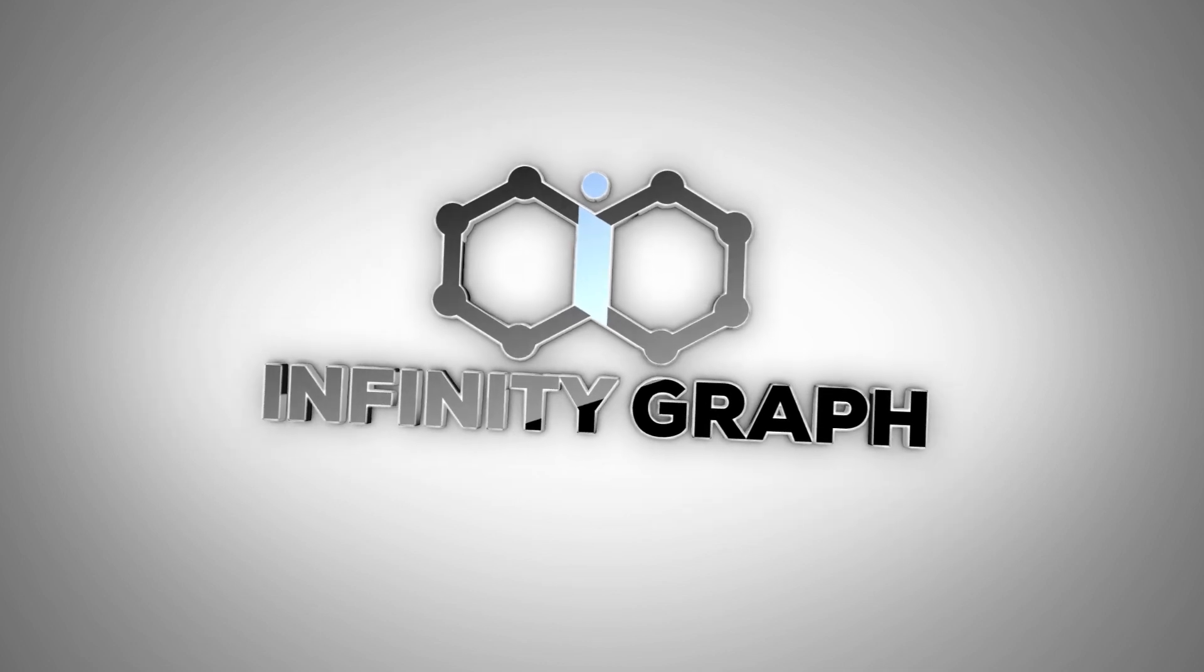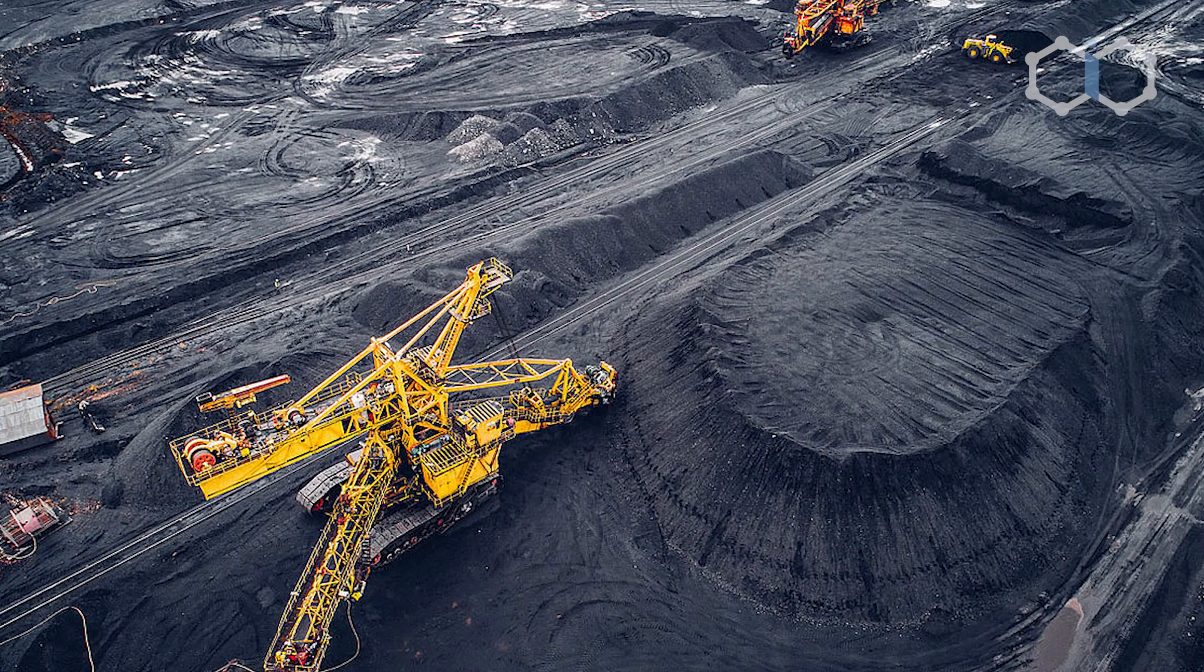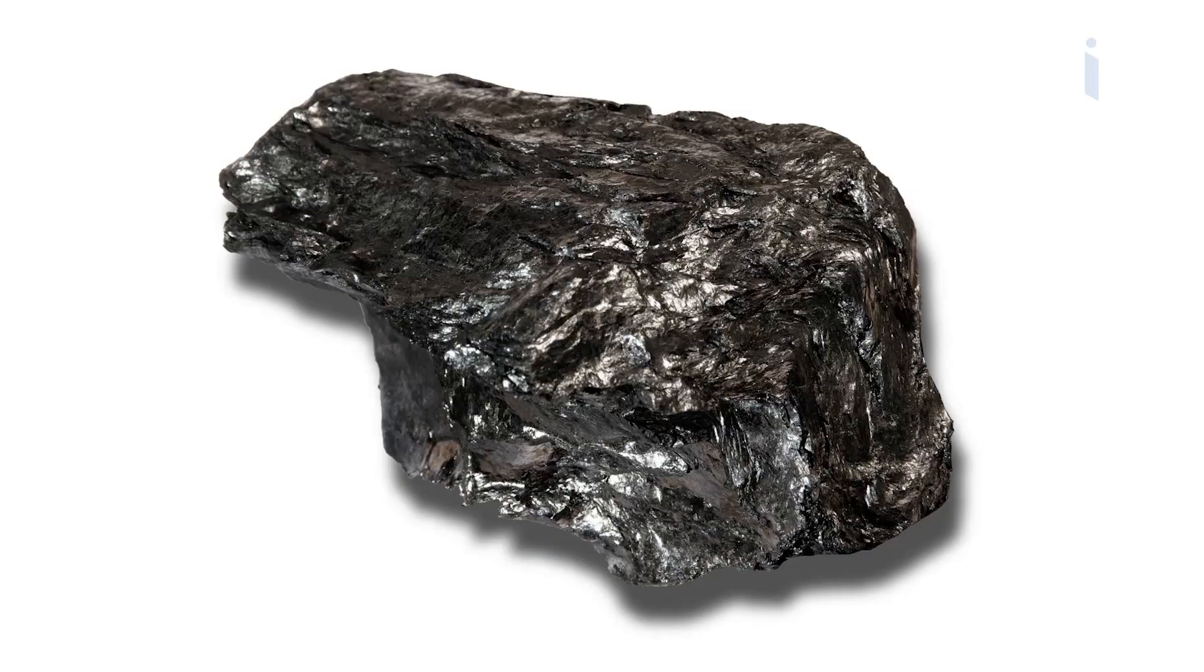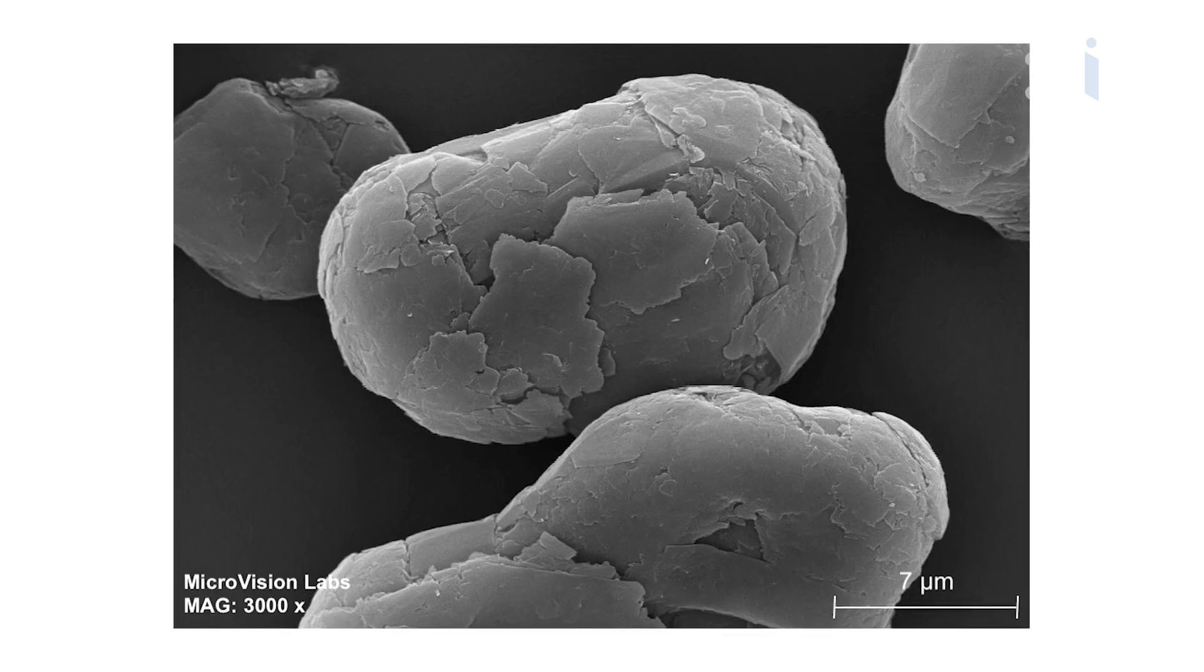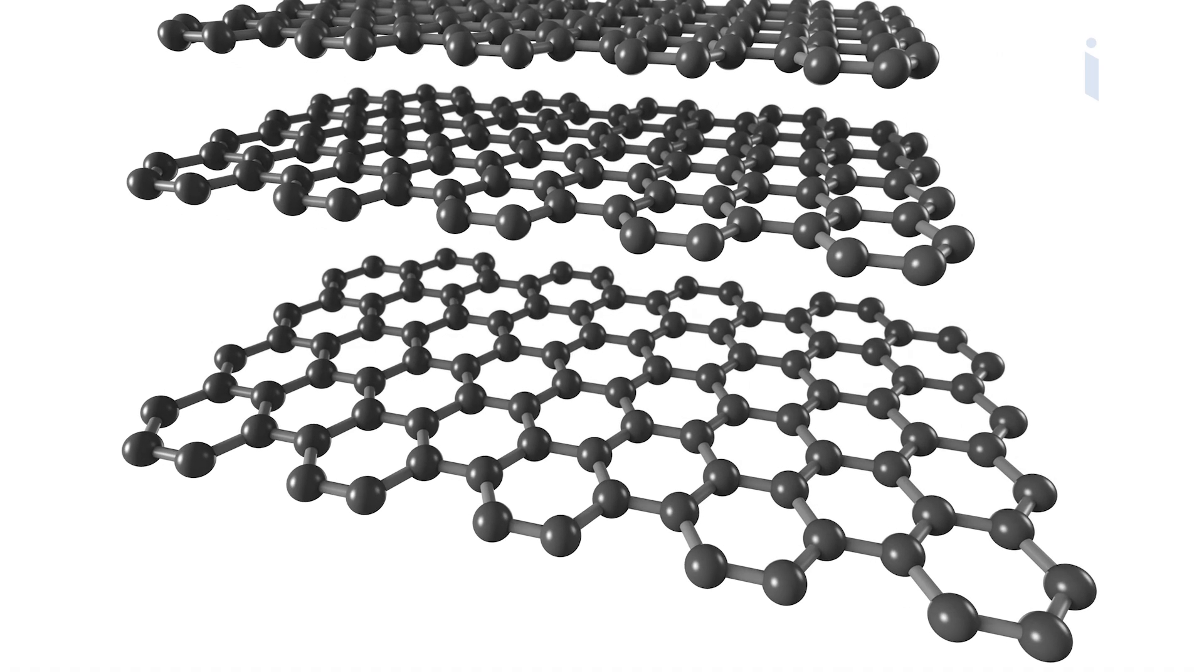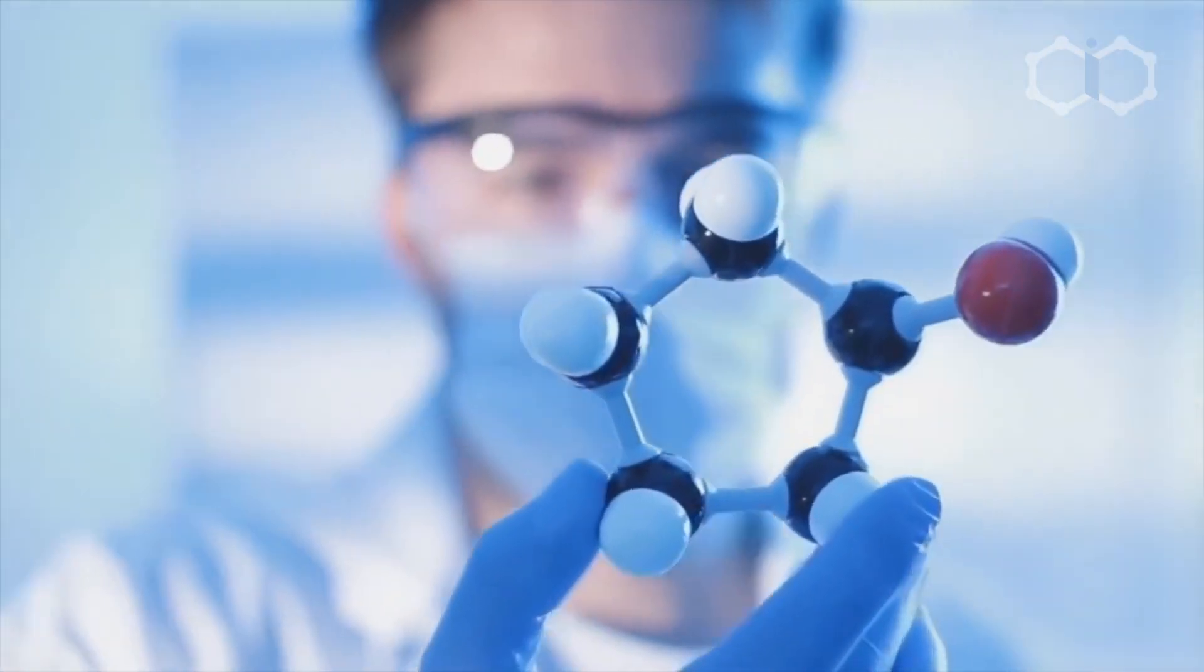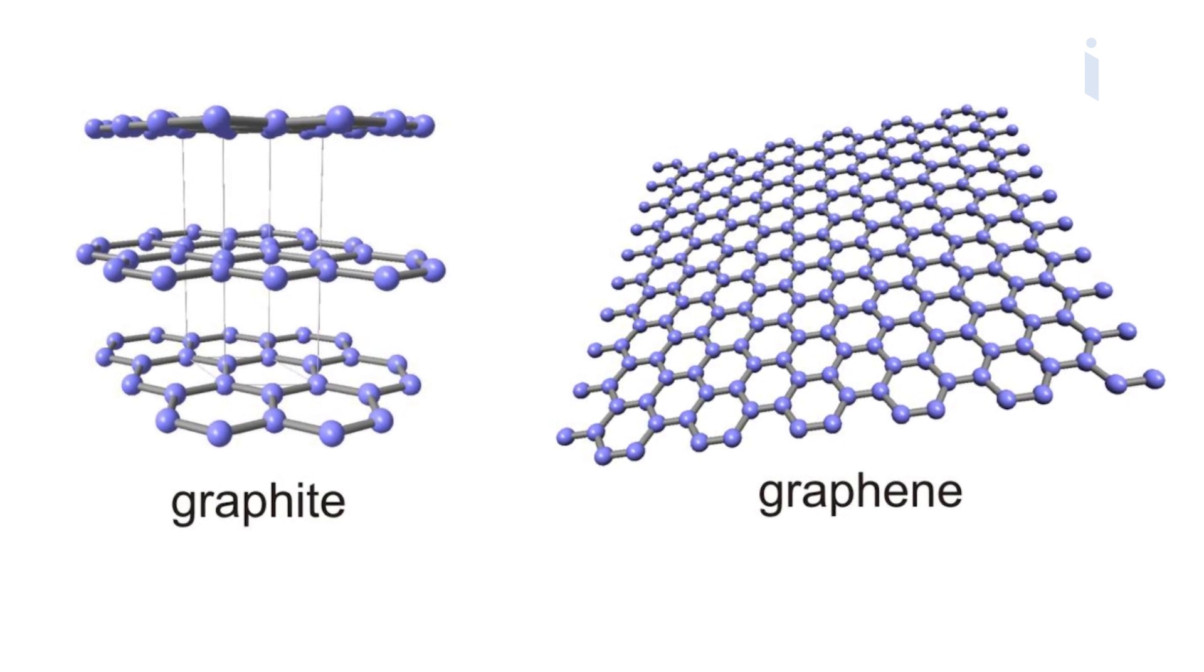Infinity Graph invites you to purchase expanded graphite technology. Graphite is a widely available extractable resource. This mineral consists of only one element: carbon. Graphite has a layered crystal structure in which carbon atoms are closely located in parallel planes. If we separate these planes from each other, we get graphene.